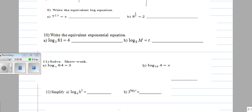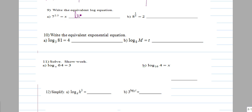Number 9, write the equivalent log equation. This is exponential equation, and in log, this is the base, base 7, that goes down here. The answer to a log is always the exponent, so the exponent in this case is 2.3, so then this x goes here.